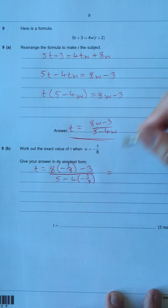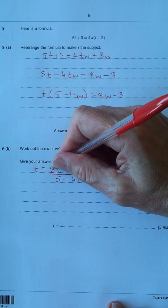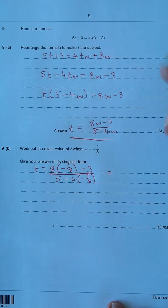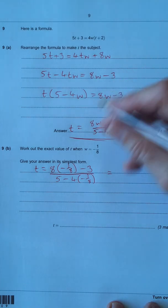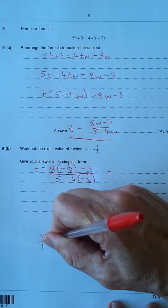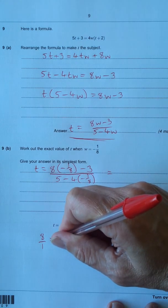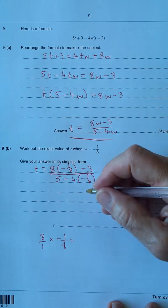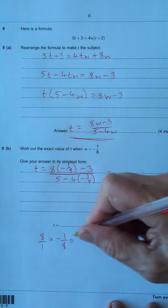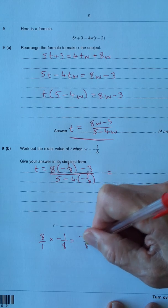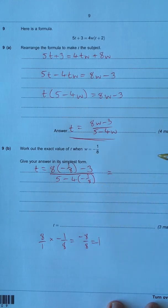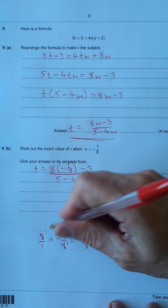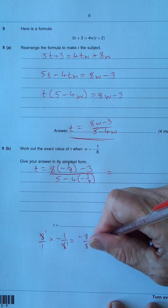OK. If I just come down here, 8 times minus 1 eighth. Remember, 8 is just any whole number is over 1, and it's just like multiplying fractions. So I've got 8 over 1 times minus 1 eighth. So you can either cancel or just multiply the top, multiply the bottom. 8 times minus 1 is minus 8 over 8, which equals minus 1. I would personally like to cancel there and there. 8 goes into 8 once, 8 goes into 8 once, and you end up with minus 1.